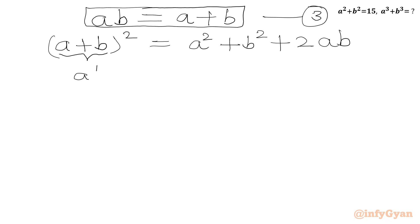Now a plus b equals ab, so we can write (ab)² equals a² plus b². This is 15, so we will write 15 plus 2 times ab.